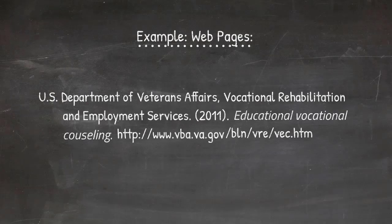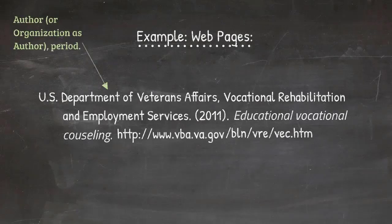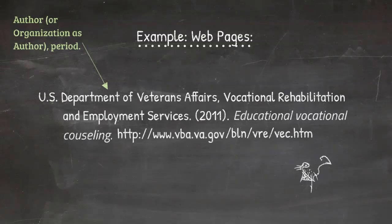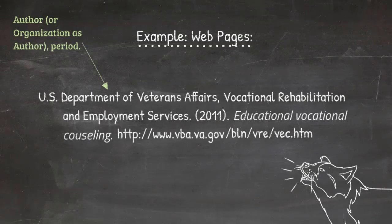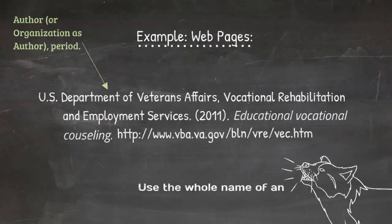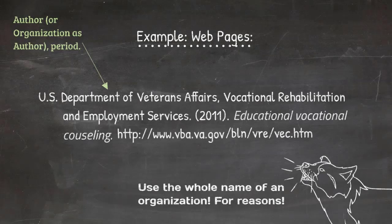Looking at a website citation example, I've chosen one from a government source to illustrate using organizations as authors. Many documents, especially from government sources, have organizations rather than individuals as authors. When you have an organization as the author, use the entire name — for example, U.S. Department of Veterans Affairs, Vocational Rehabilitation and Employment Services. With government sources especially, there can be subunits within an organization, so we're striving for precision.